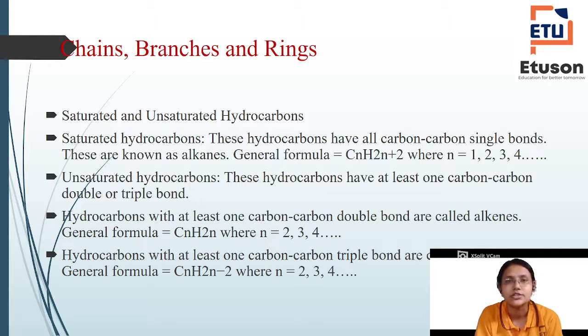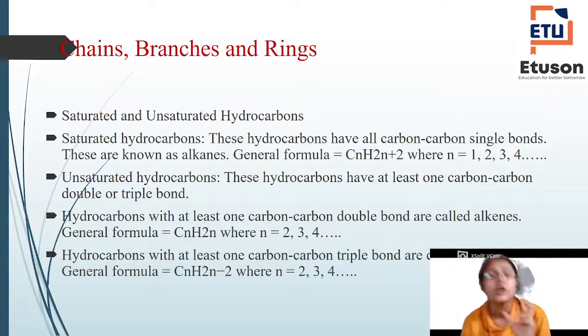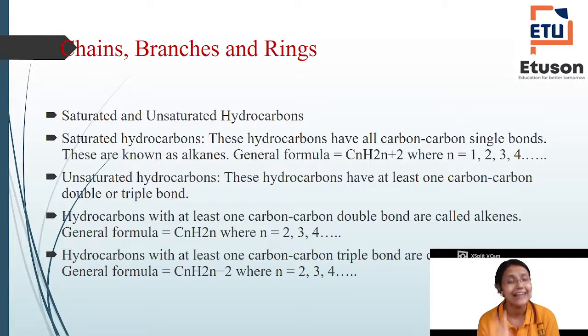Next, chains, branches, and rings. What is saturated and unsaturated hydrocarbons? Saturated hydrocarbons: these hydrocarbons have all carbon-carbon single bonds. These are known as alkanes. Alkane is single bond. Alkene is double bond. Alkyne is triple bond. There are two types: saturated and unsaturated carbon. In saturated you will find single bond, and in unsaturated you will find more than single bond, that is double bond and triple bond. Saturated is alkanes, and unsaturated are alkenes and alkynes.